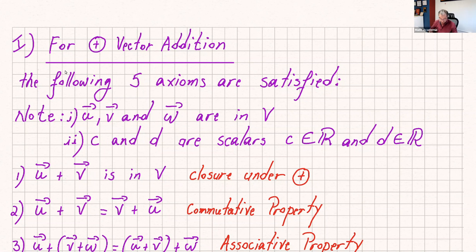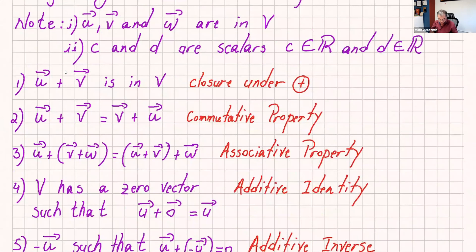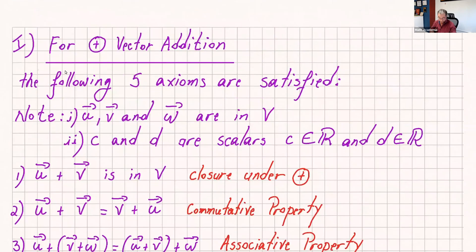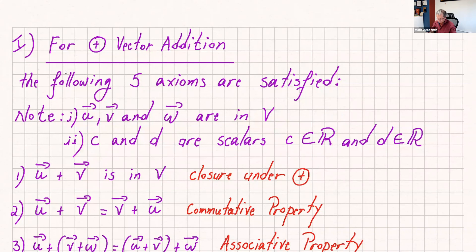Before starting the examples, just to refresh your memories, we have this notation for vector addition. When you start a proof to see if something is a vector space, the best thing to do is to define u, v, w that are in V, and your scalars. Here, c and d are scalars and these are real numbers.